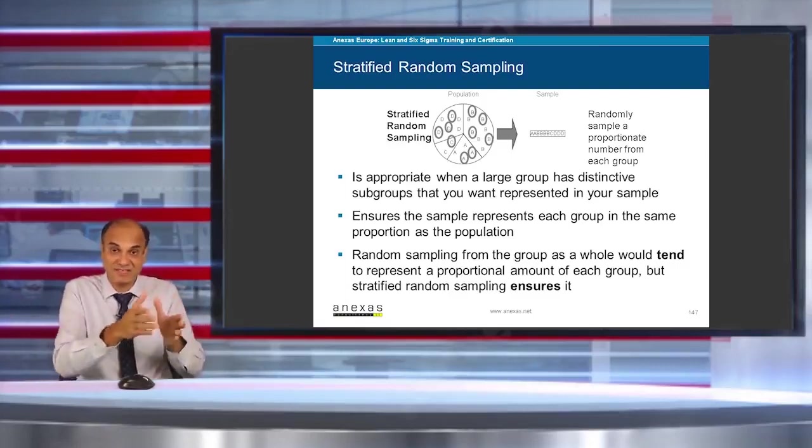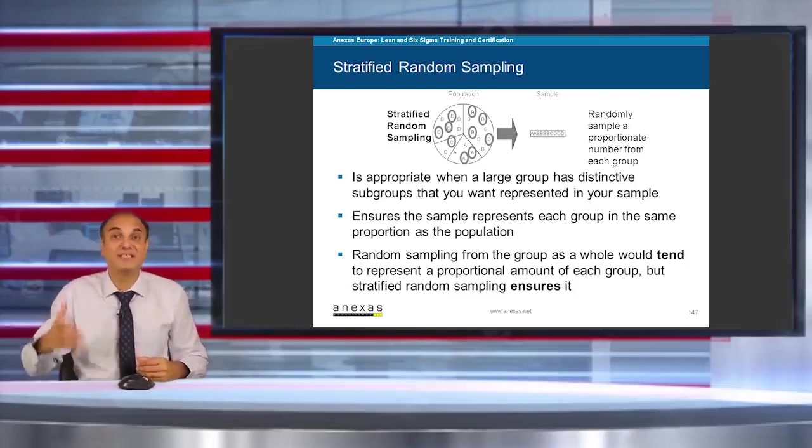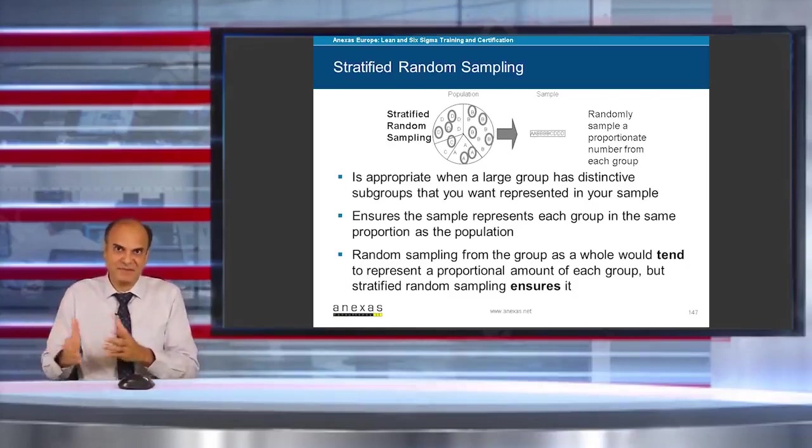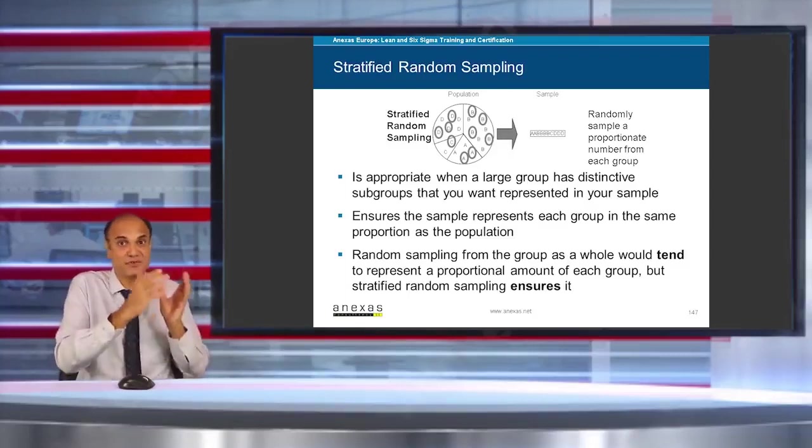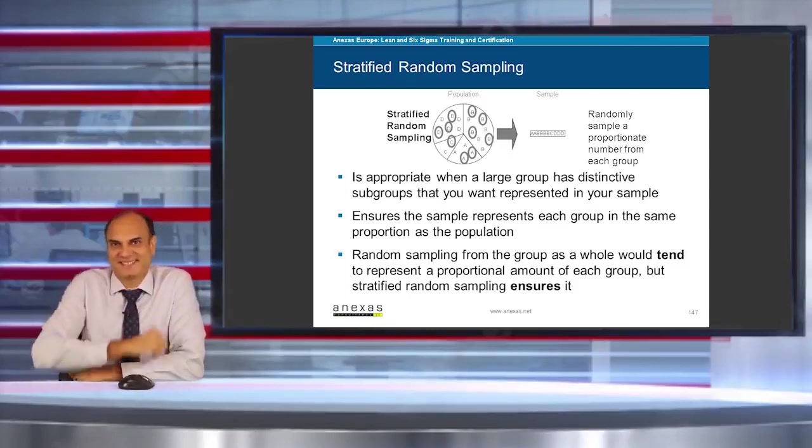I would use stratified random sampling, meaning I will stratify my cycle time data as per the city. So I'll collect a few samples from City A, a few from B, and a few from C. Random sampling from the group as a whole would tend to represent a proportional amount of each group, but stratified random sampling ensures it.